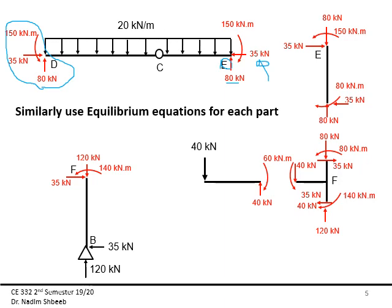Going back to the other part, just before joint F — these are equal and opposite: 150 with 150, 35 kilonewtons with 35 kilonewtons, and 80 kilonewtons with 80 kilonewtons. Using the moment equilibrium equation: 150 kilonewton meter minus 35 times the distance of 3, giving a moment of 80 kilonewton meter, which is then equal and opposite at this joint.